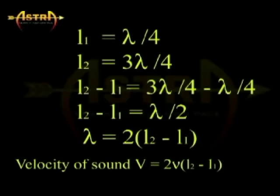In the above equation, ν is the frequency of the tuning fork, L2 is the length of second air column, L1 is the length of the first air column. In this way, we can find out the velocity of sound in air by a method called resonating air column method.